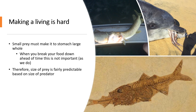Animals have been choking to death on food items for a long time. Here's a picture of a pike that tried to feed on a bass and ended up choking — it couldn't get the bass down. Here's a dolphin that tried to eat an octopus; the octopus crawled back out, got stuck in the throat, and the dolphin choked to death. And at the bottom, here's a fossilized fish with another fossilized fish in its mouth, showing this is not a novel phenomenon.